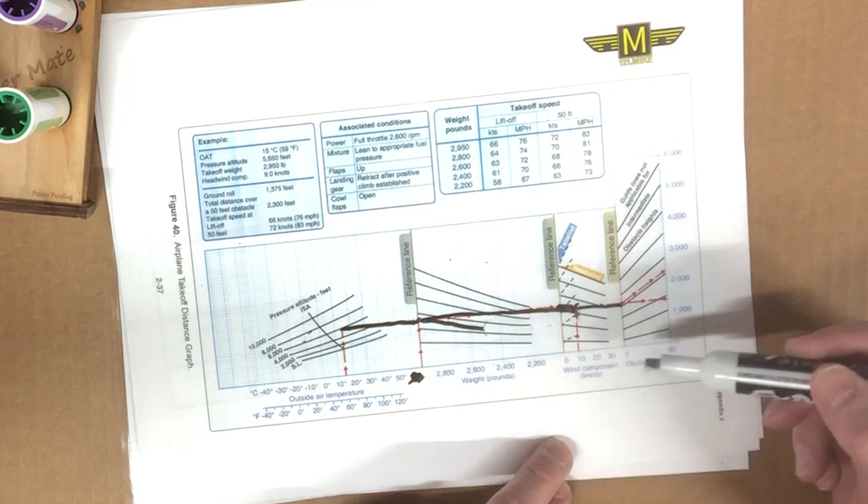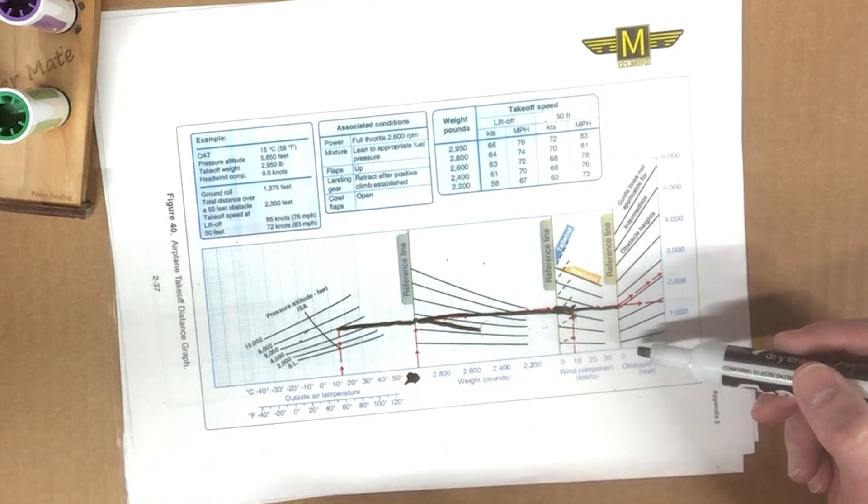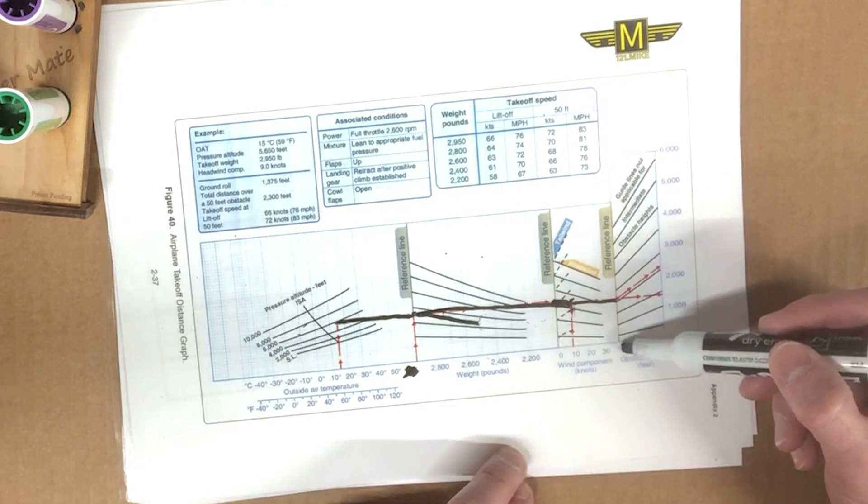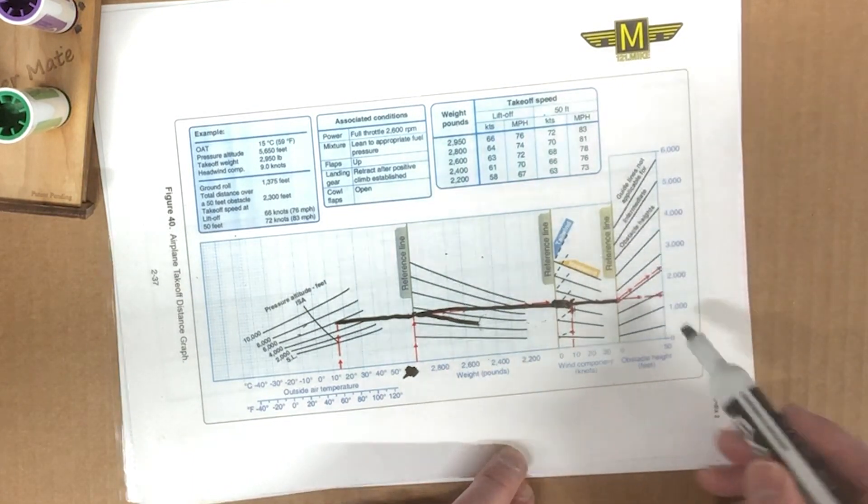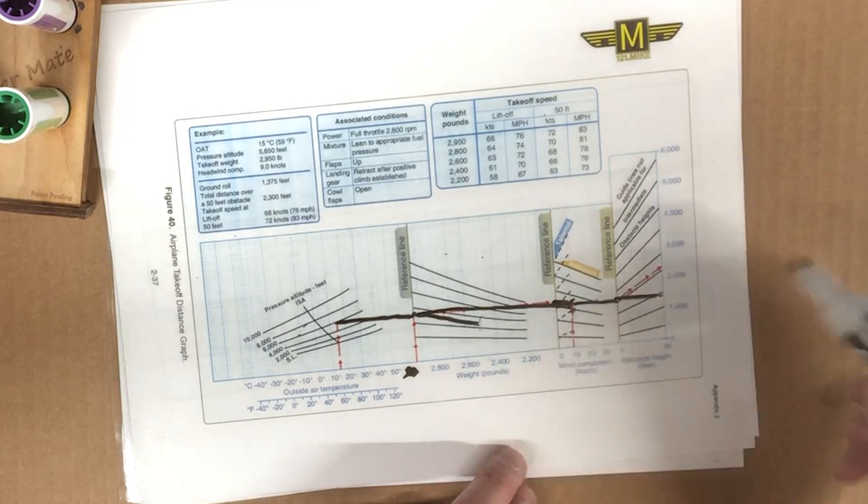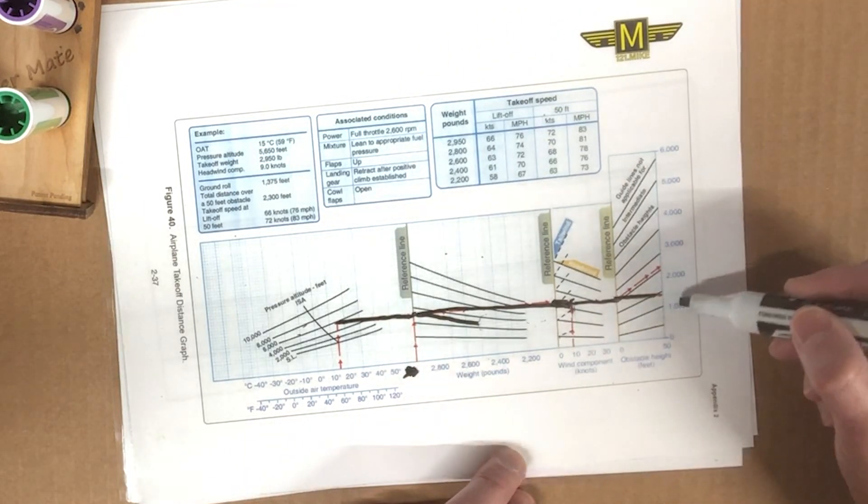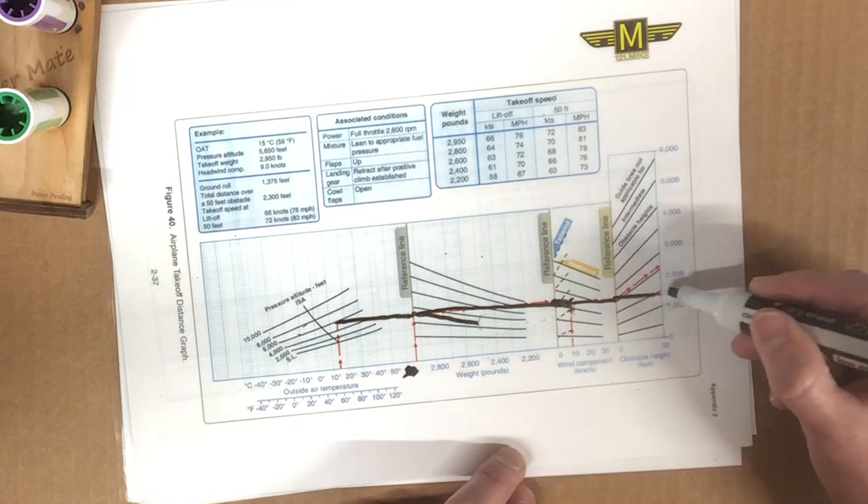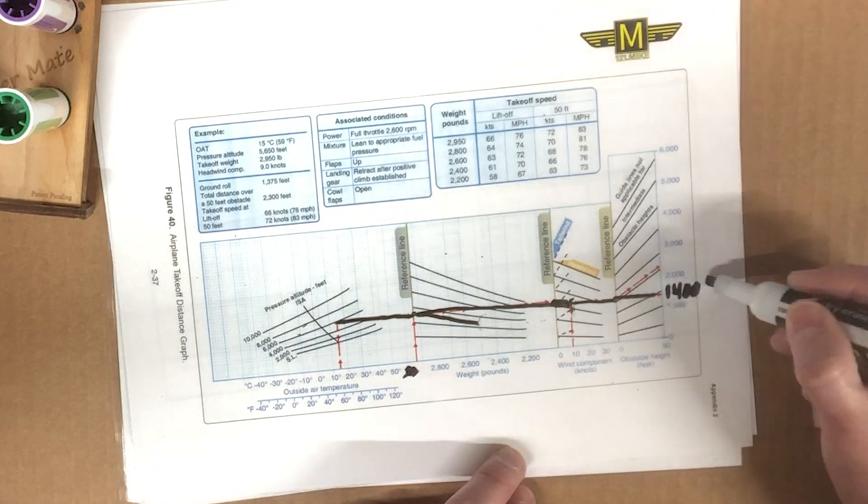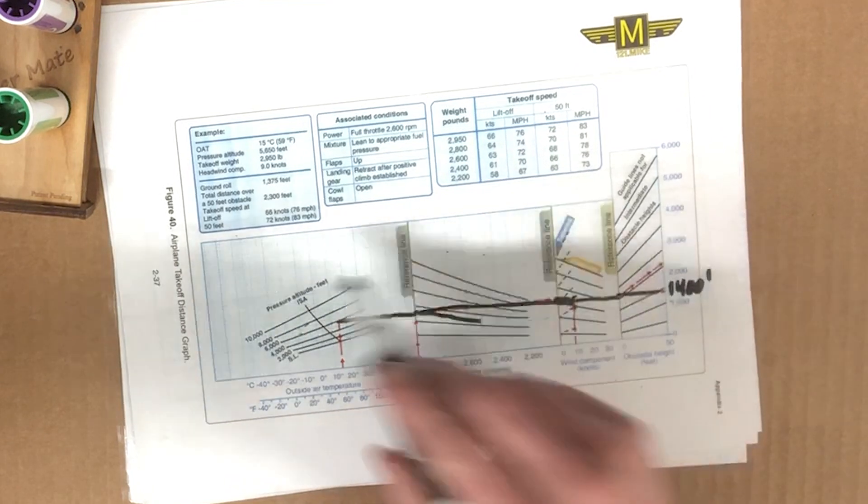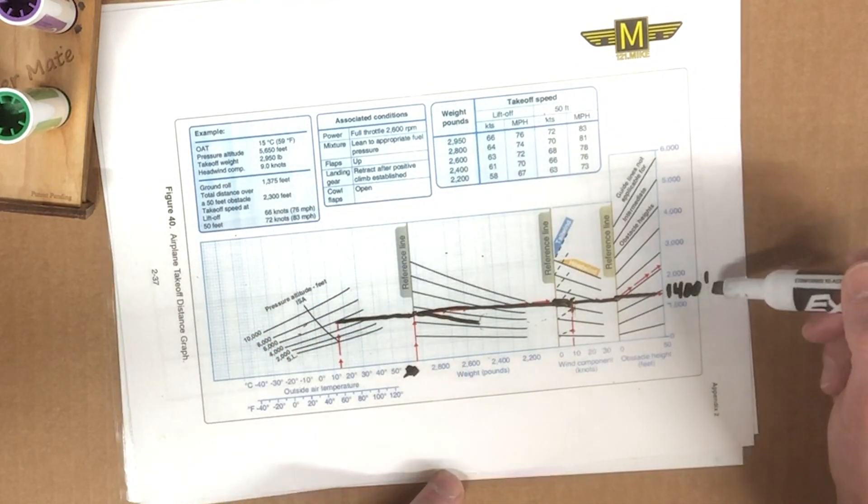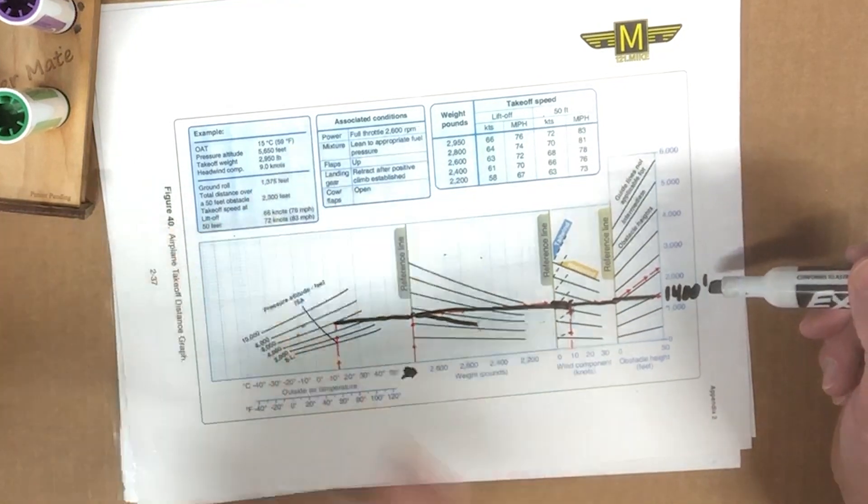This one here of course is zero, right? If we just lift off the ground, we have gone over an obstacle that's zero feet. And so this zero-foot obstacle represents our ground run. And we'll come straight across out to get that number here, which is, if you look at this scale here, it looks to be about 1,400 feet for a ground run. You can see here, the answer has it at 1,375. So that's pretty close. You'll most likely on a test see something like 1,400 instead of an exact 1,375.